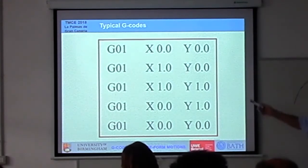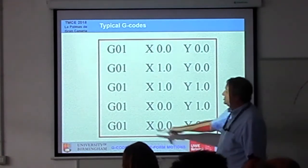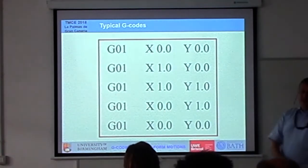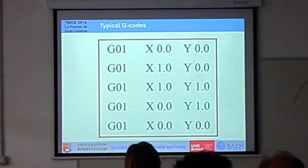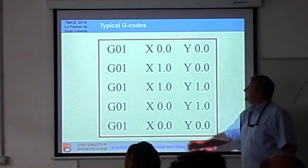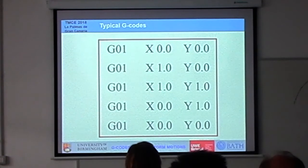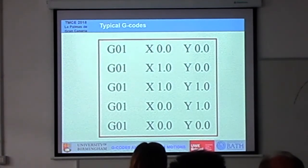Those of you who have done manufacturing before have probably come across the G-codes. This is the output from the CAM software. In this instance here, G01, it's a linear interpolation, straight line. Start point here, start point in space. It's then going to move in X by one unit, then move Y one unit, X one unit to come down. So again, it produces a square.